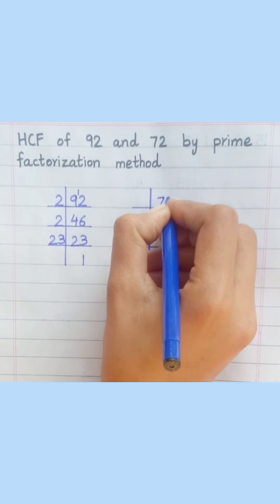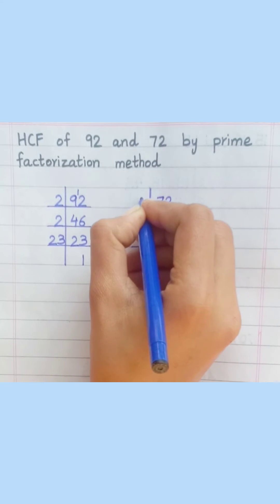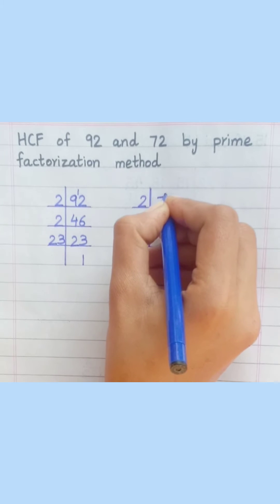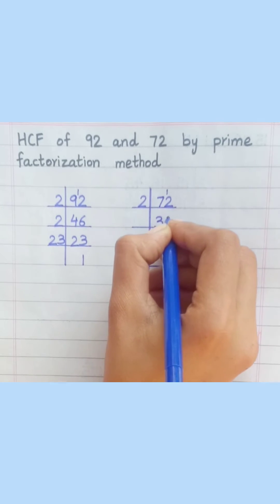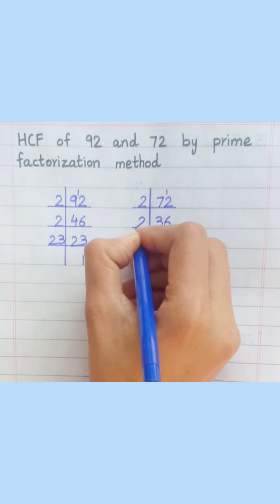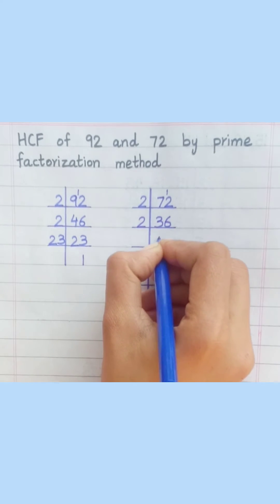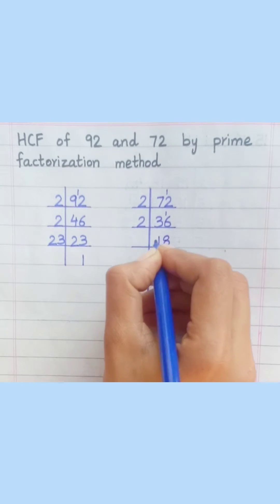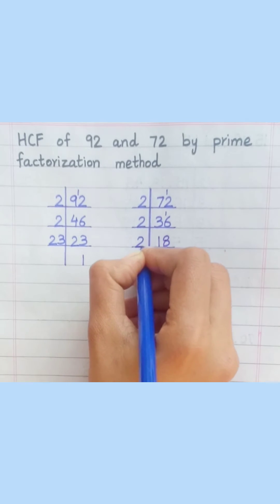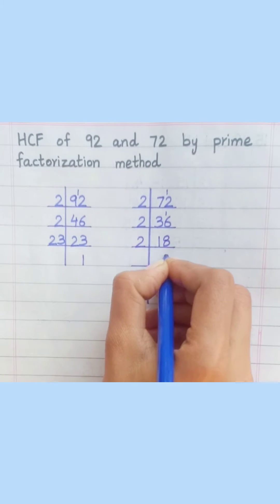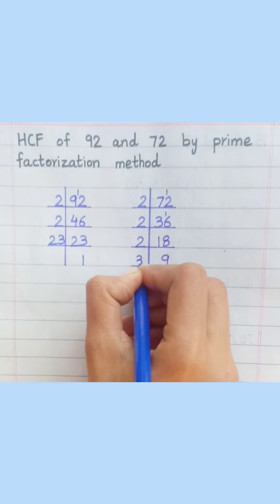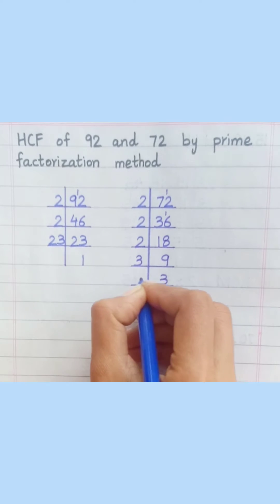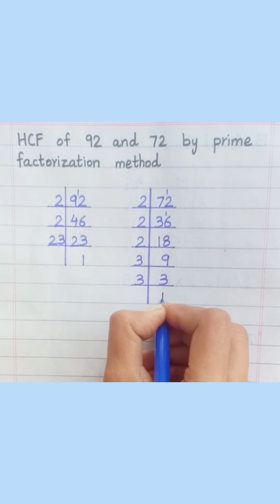Now for 72: two threes are six, two six are twelve, two ones are two, two eights are sixteen, two nines are eighteen, three threes are nine, three ones are three.